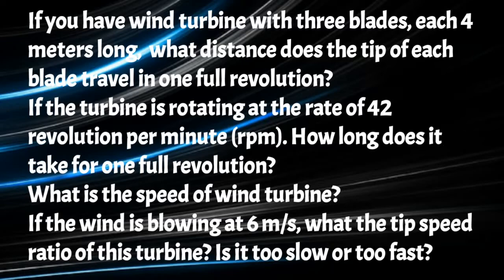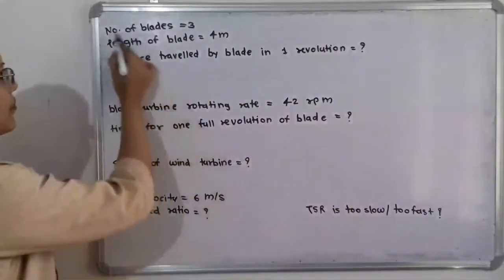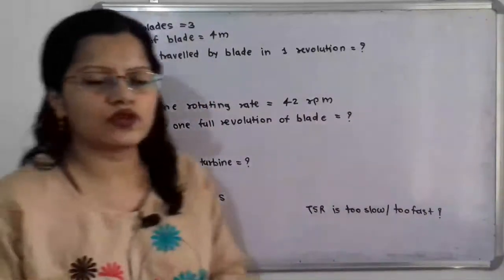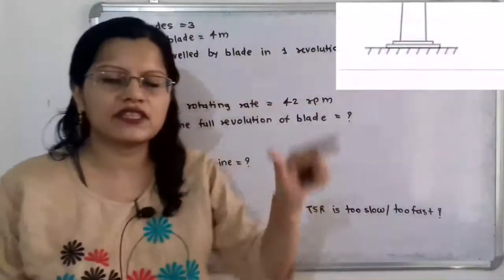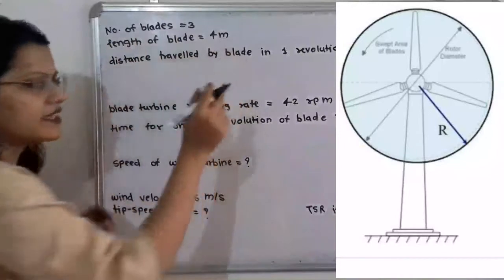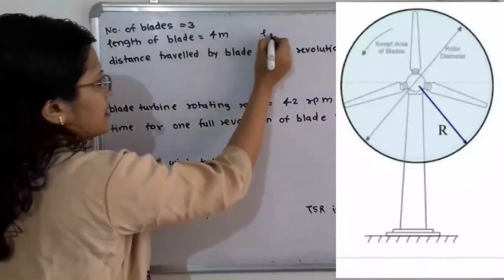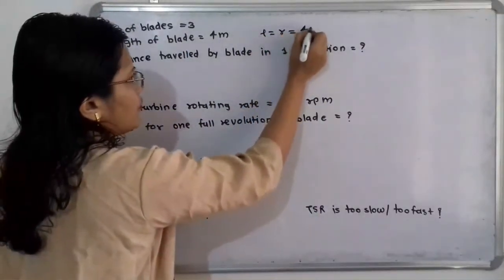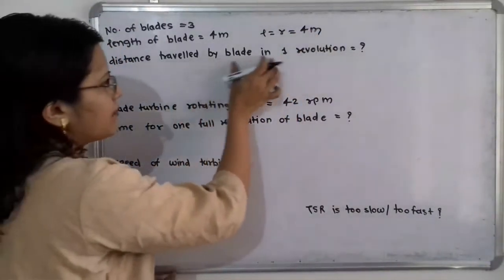Let us first understand the given data and what we have to find. The number of blades is 3, and the length of each blade is 4 meters. This blade length acts as the radius for the circular area swept by the blades. So length of blade L equals radius R equals 4 meters. We have to find the distance traveled by the blade tip in one revolution.